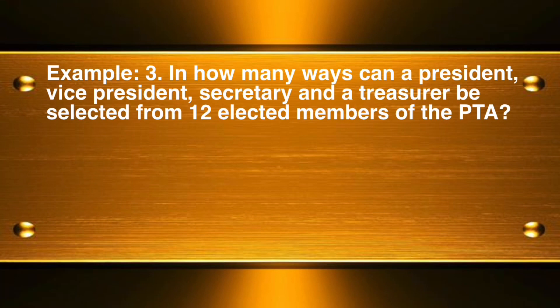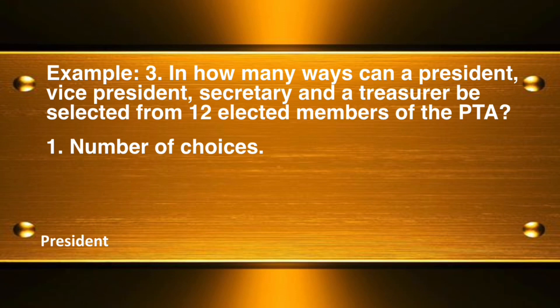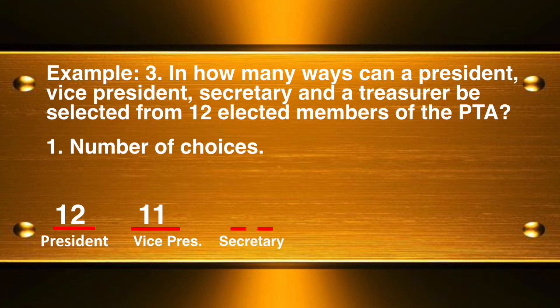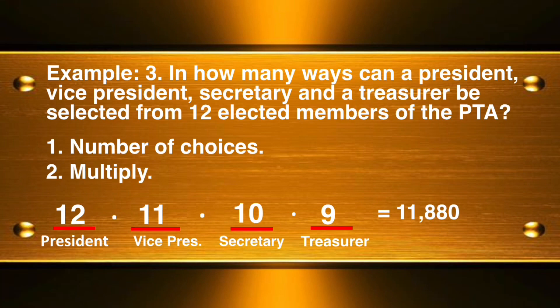Example 3: In how many ways can a president, vice president, secretary, and treasurer be selected from 12 elected PTA members? For president, all 12 members are eligible. For vice president, one is already chosen, leaving 11. For secretary, 10 remain, and for treasurer, 9. Multiplying: 12 times 11 times 10 times 9 equals 11,880 possible outcomes.